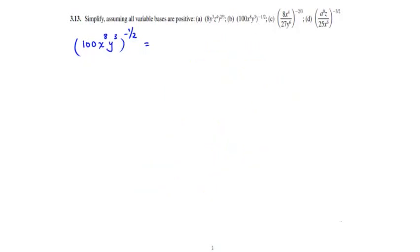Moving on to Part B, we want to simplify 100x to the 8th y cubed, all raised to the negative 1/2 power. The first thing we do is remove the negative exponent by taking the reciprocal of the base, raised to the positive exponent. So the term simplifies first to 1 over 100x to the 8th y cubed, all raised to the 1/2 power.